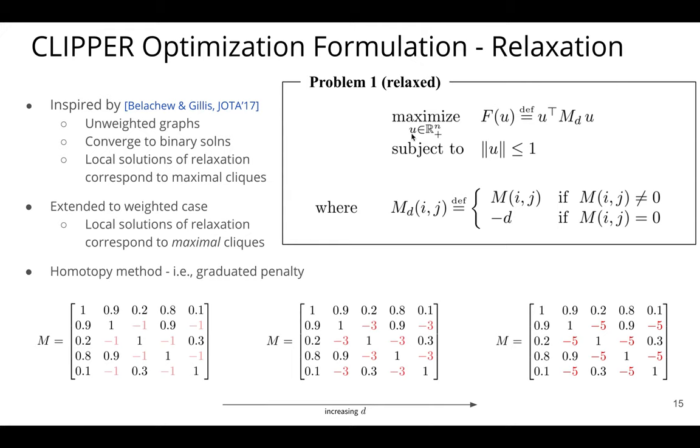And what we do then is, if we look at this relaxation a little bit more, the objective here has this U transpose M_D U where M_D is encoding that clique constraint from the adjacency or affinity matrix M. So for edges that are not to be chosen, we impose this penalty here, negative D, where D is a positive scalar. And what we do is we solve this in a homotopy fashion. So this is like a graduated penalty. And over time, as we solve this problem, we keep increasing the size of D to penalize these incorrect edges more.